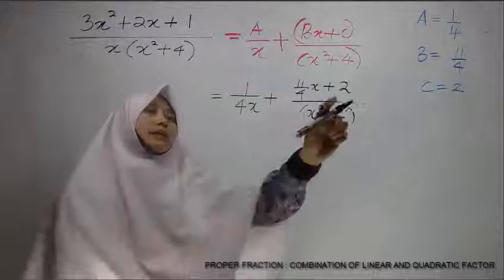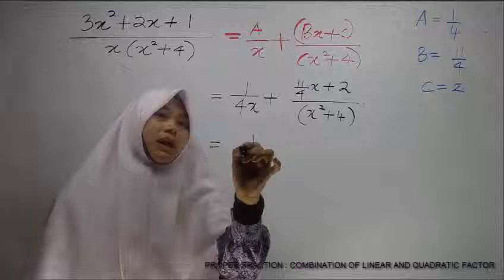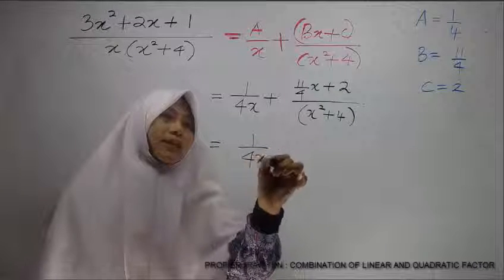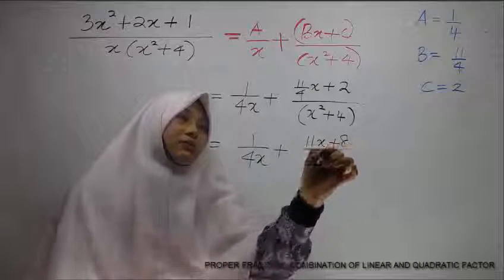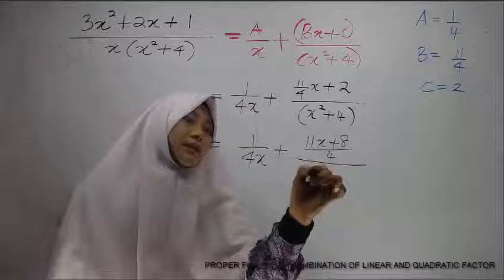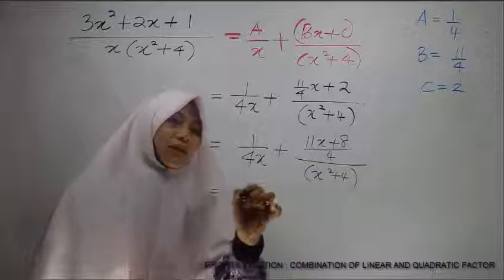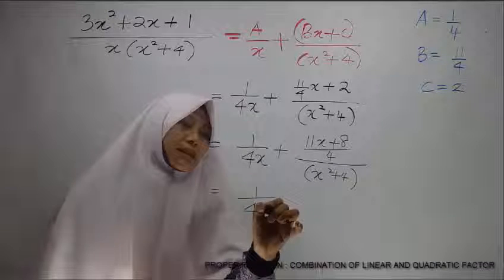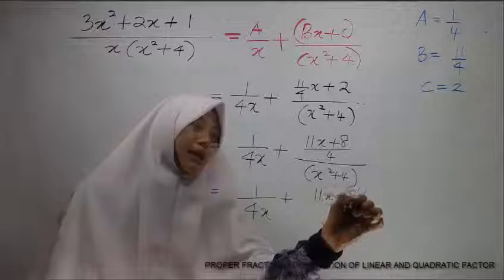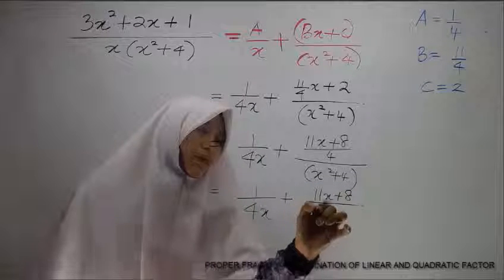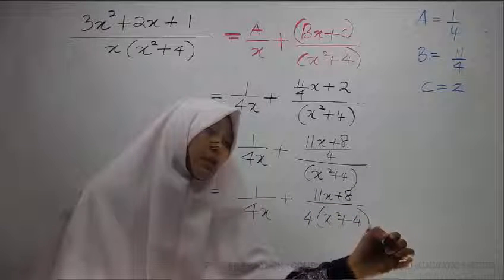To make it equal, this one must be 4 over 4. So it becomes 1 over 4x plus 11x plus 8 over 4 over x squared plus 4. Now, our final answer would be 1 over 4x plus 11x plus 8 over 4x squared plus 4. This is our final answer.